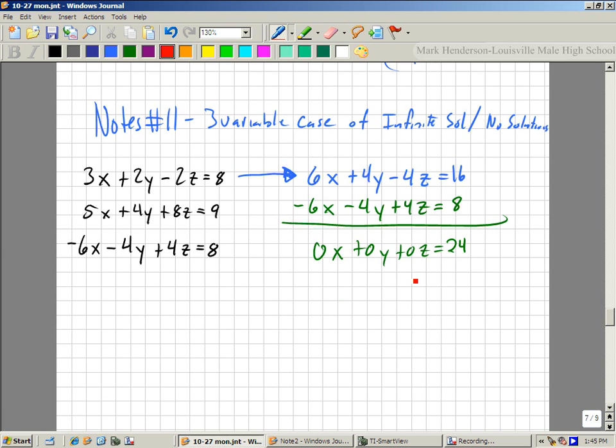So here what we have is 0 equals 24. So, is that ever true? So, how many solutions does this have? It has no solutions. Because if two out of the three equations don't match up, then there's no way that three out of the three equations could. Does everybody agree with that? So that is what happens when there's no solutions. So let's look at what happens when there are infinite solutions.